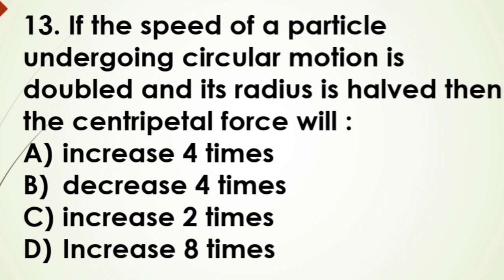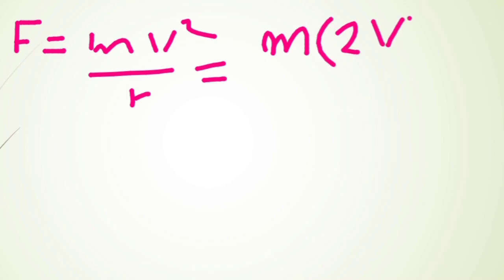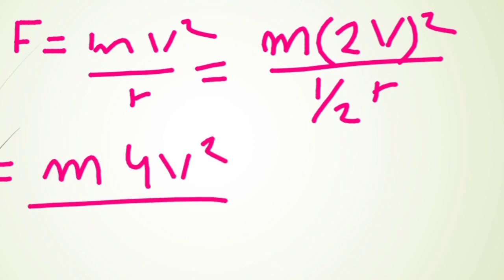In the question it's given that we double the velocity and halve the radius. So it will be m times 2V whole square divided by half of the radius. When we simplify it, the force will be m times 4V square divided by half of r. Then again, it will go there and be multiplied by 4.